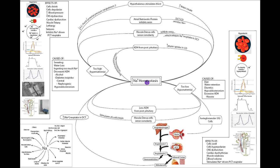Let's go through how the body controls sodium. In a general sense, the JG cells and MD cells will be involved because they're located in the kidney and substantially help regulate fluid volumes. Since fluid volumes are essentially regulated by noting sodium, these then act as sodium sensors.